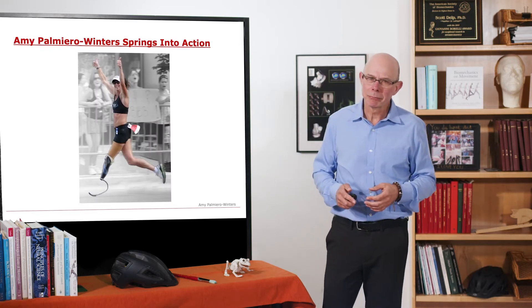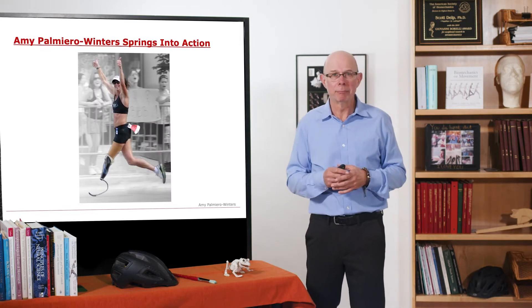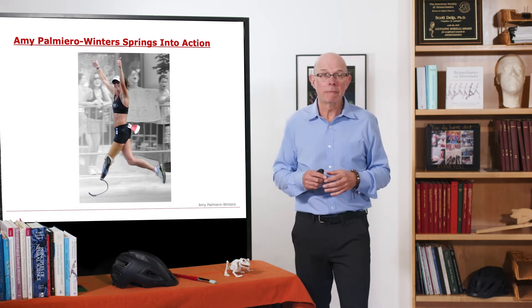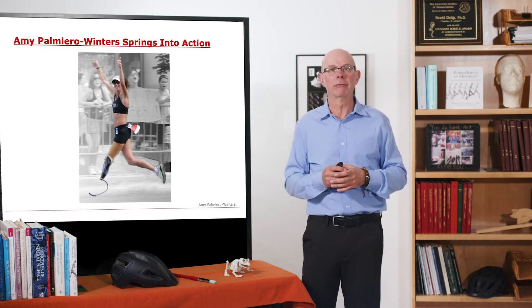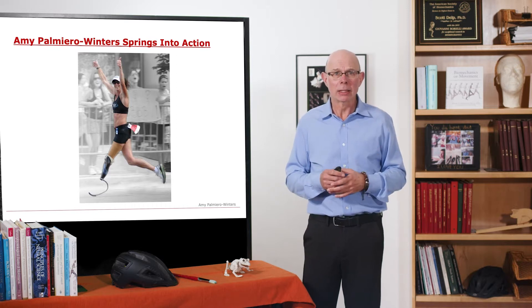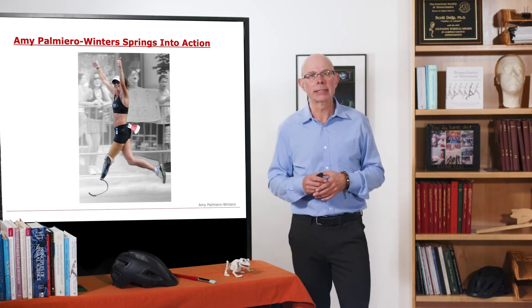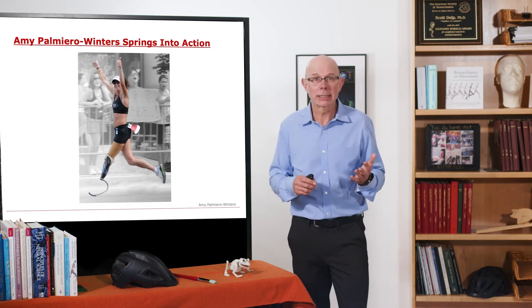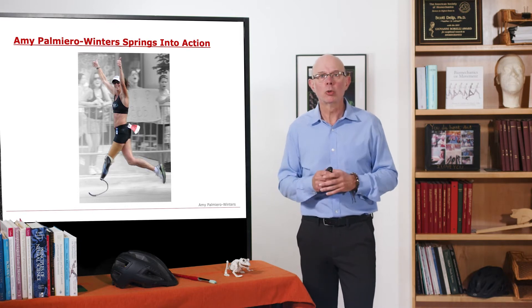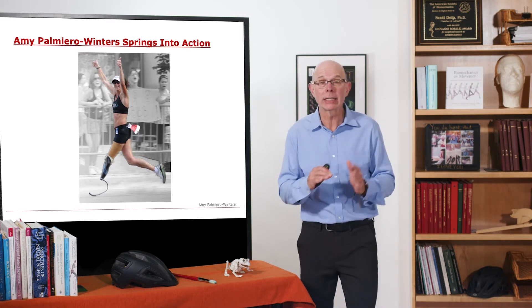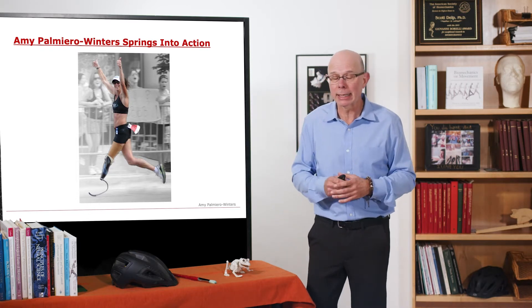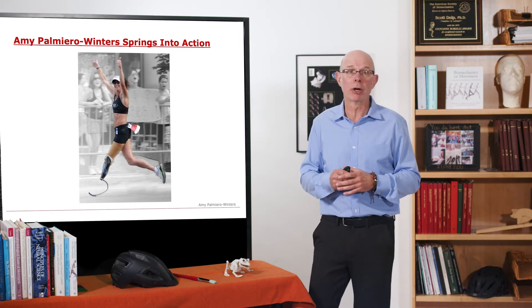Here's a great example. In 2007, Amy was the first athlete with a physical disability invited to race in the elite able-body division of the New York City Triathlon. Amy lost her left limb below her knee and wears a prosthesis. If you look at her prosthesis, it looks nothing like a foot or an ankle.